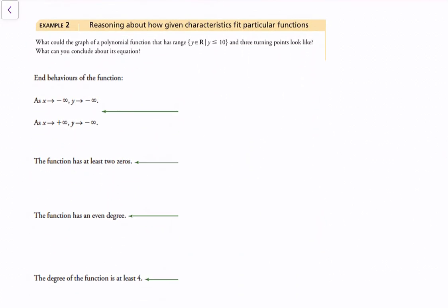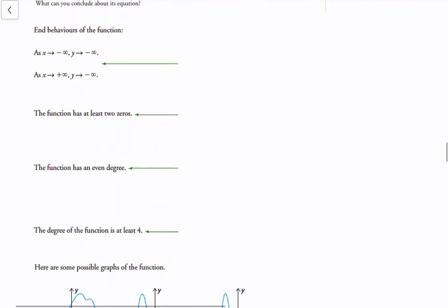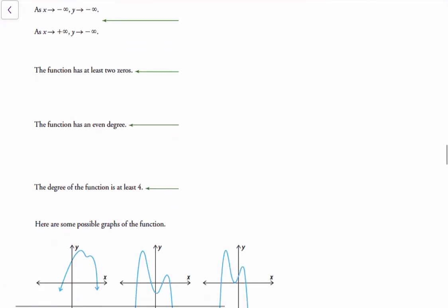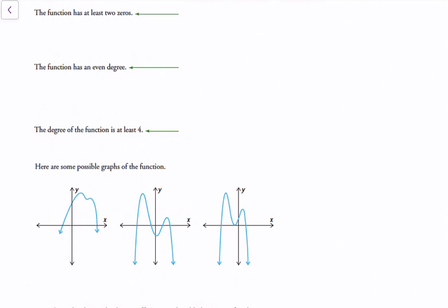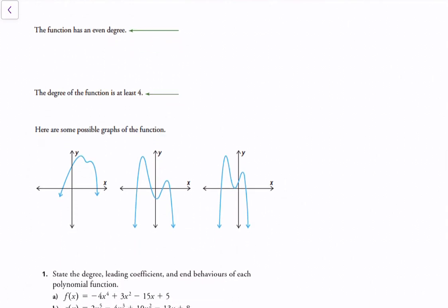Now let's reason about characteristics that fit particular functions. What could a graph of a polynomial function with range y ≤ 10 and three turning points look like? The end behaviors tell you it would be an even function with at least two zeros, an even degree, and the degree would be at least four.